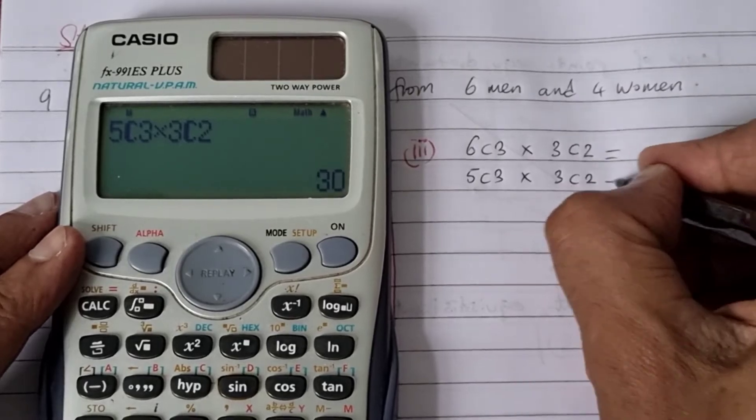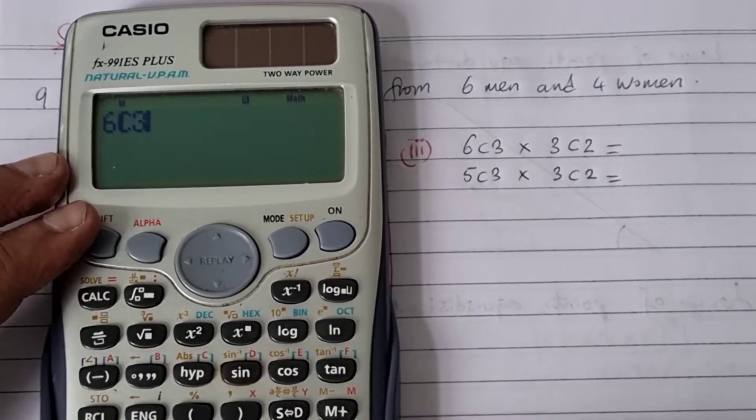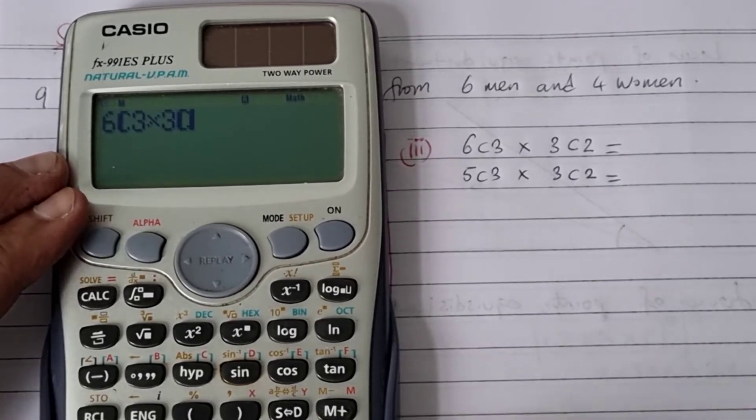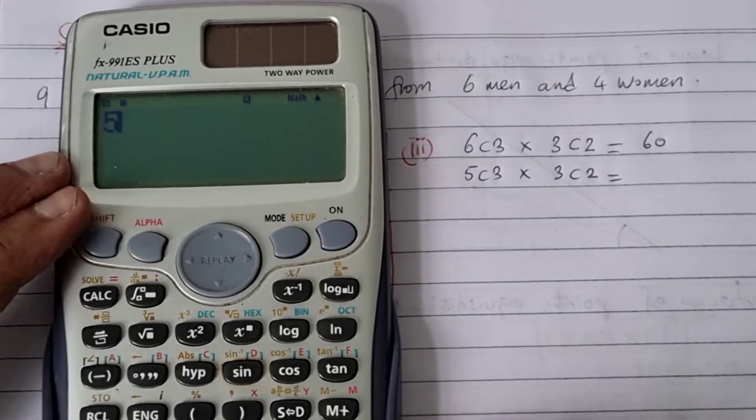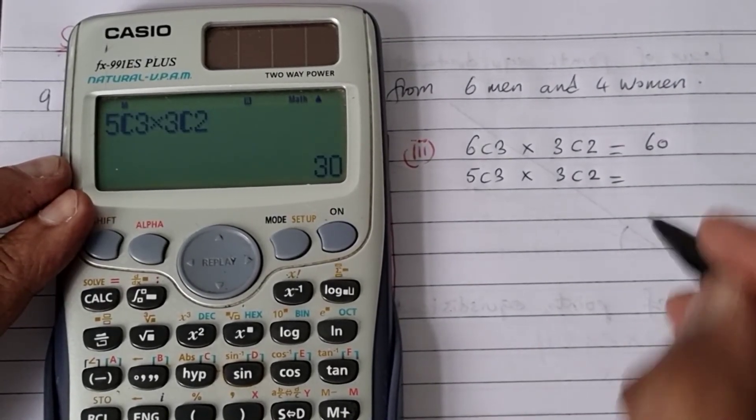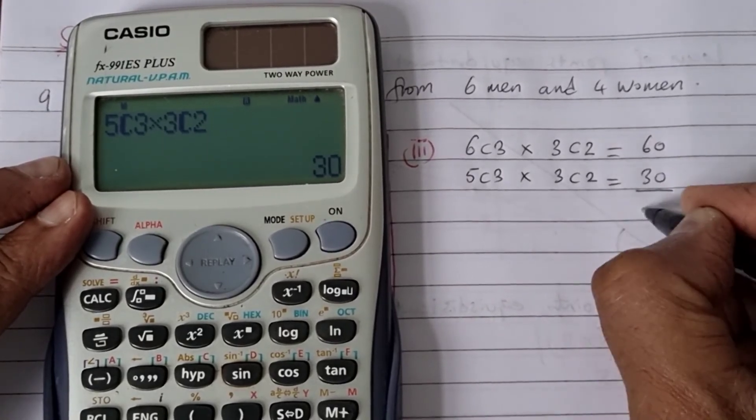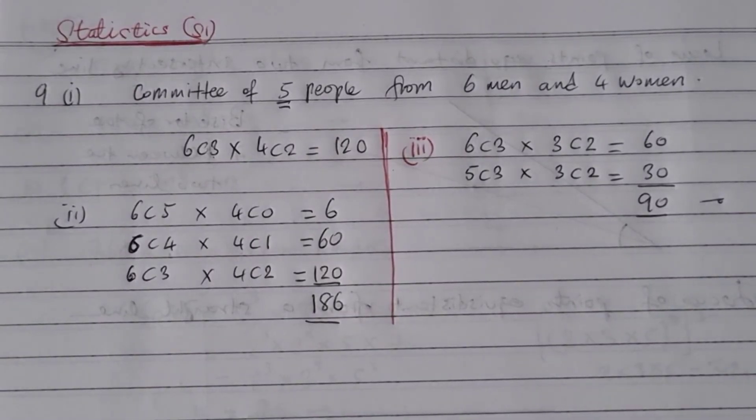So let's see how much this comes to. We've got then six choose three times three choose two, so that's 60, and I've got 30. So we add that up, we're going to get 90. So that's the answer to this question. Take care.